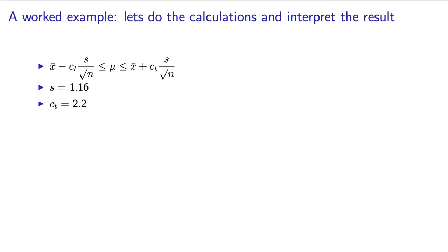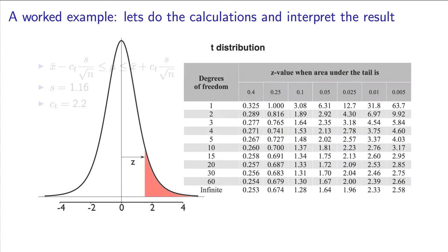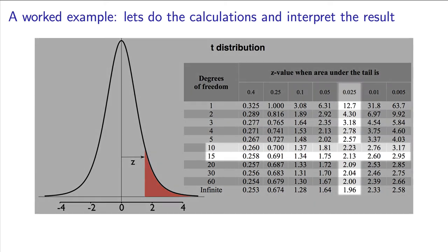You should have found the standard deviation is 1.16. The critical t-value at the 95% confidence level leaves 2.5% in each tail and it has 11 degrees of freedom associated with it. A value of 2.2 is a reasonable interpolation from the table.